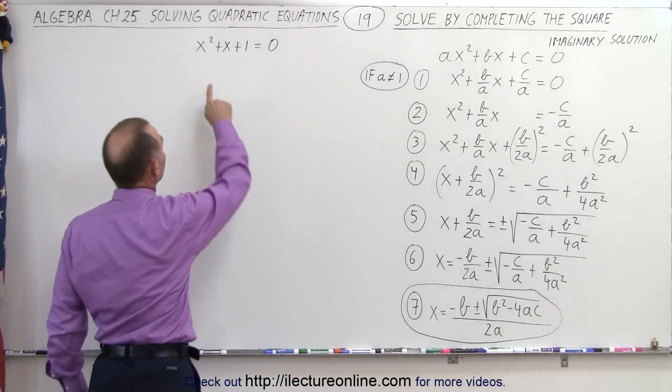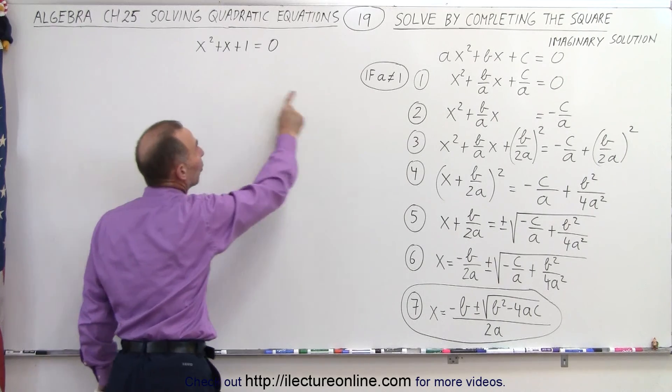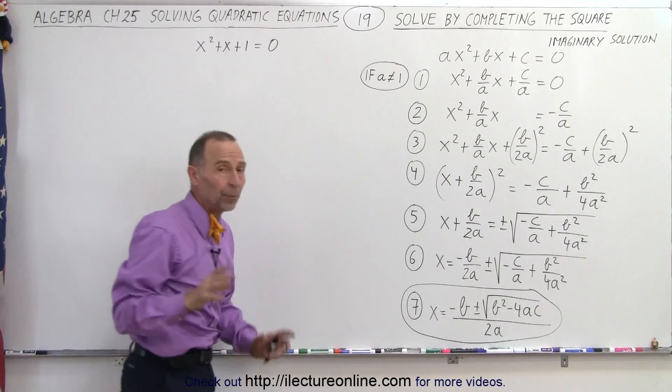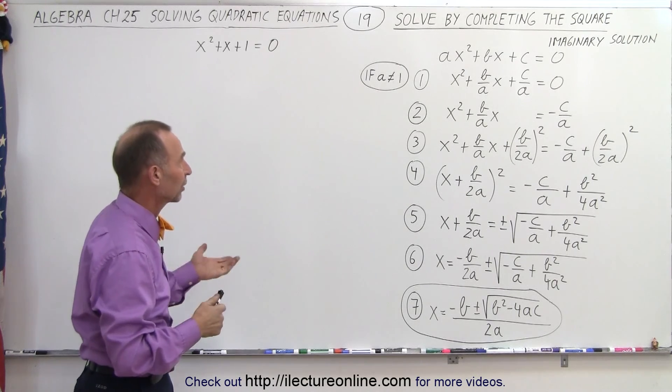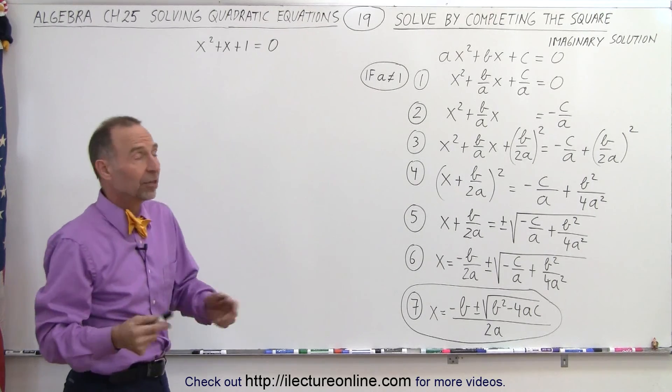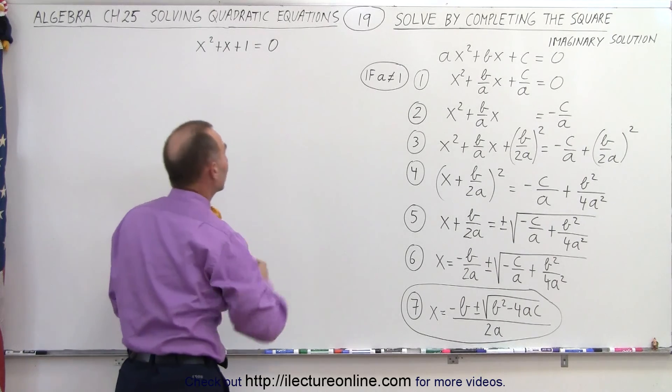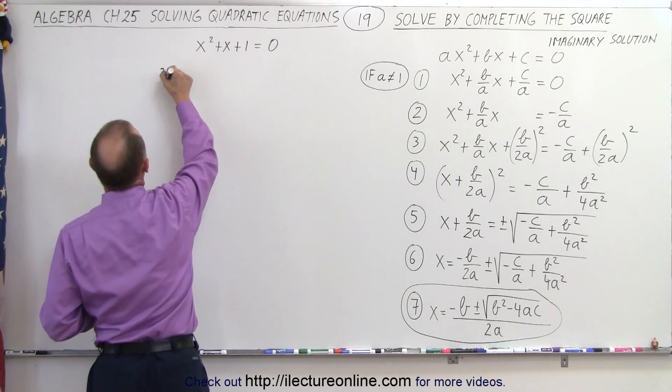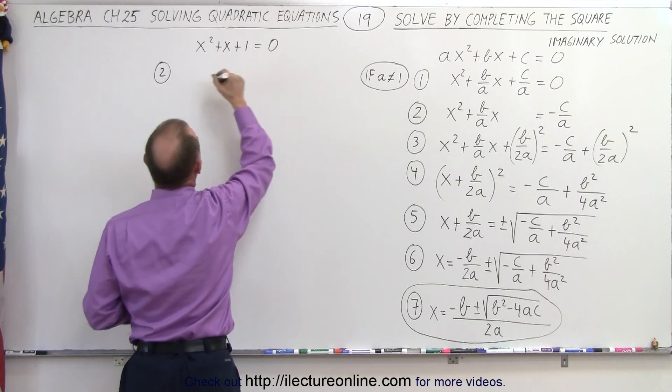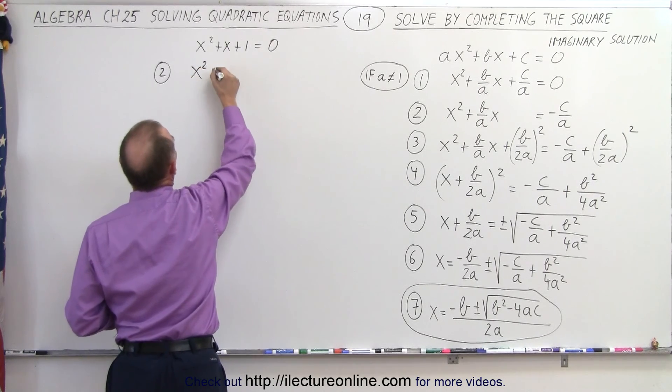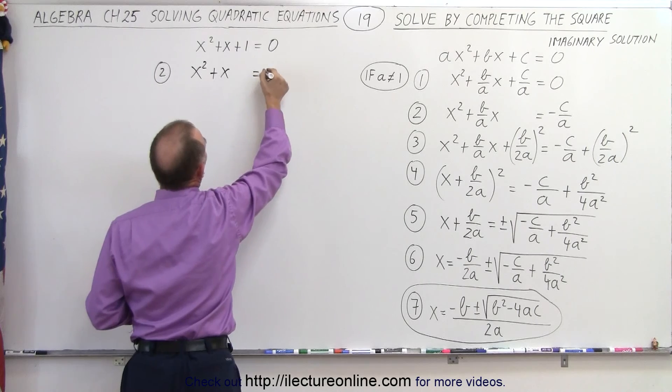Now notice in this particular case, a is equal to 1, so we don't have to do step 1 of the general case. We don't have to divide everything by the numerical coefficient of x squared because it's equal to 1. So we can step directly to step number 2, which means we're going to take the constant term and move it to the right side. So we have x squared plus x is equal to negative 1.